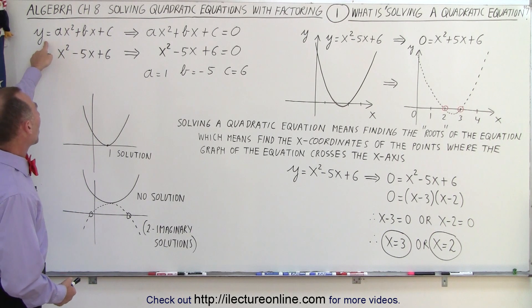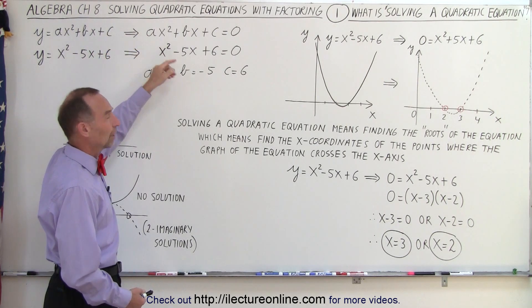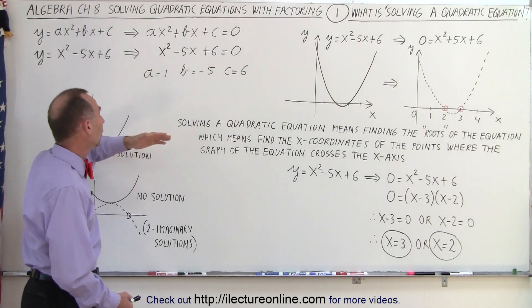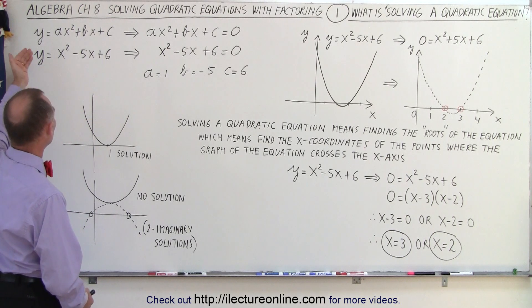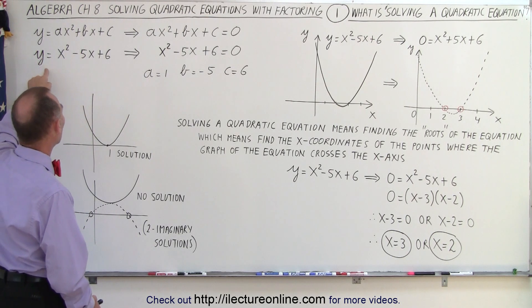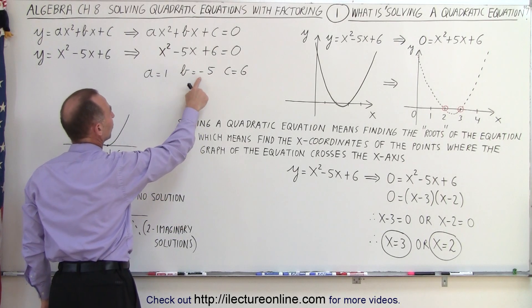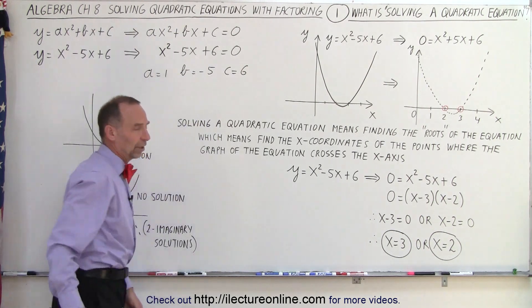But then we set y equal to 0 and we change the equation to something like this. Now of course this is the general form. We can put numbers in there such as y equals x squared minus 5x plus 6. And then we set y equal to 0. So where a equals 1, b equals negative 5, and c equals 6.